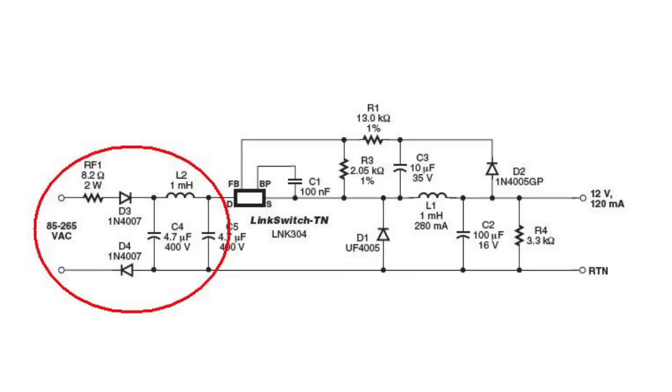L1 throttle provides a continuous mode of operation for the converter. During every period of operation, the current flowing through the throttle is not interrupted.